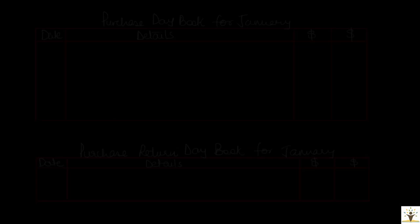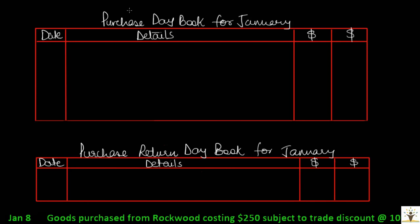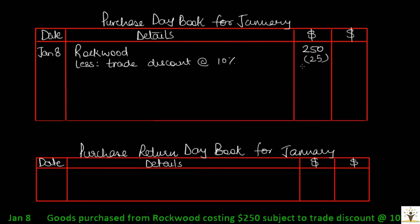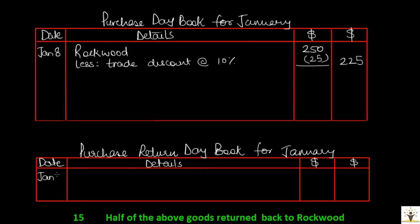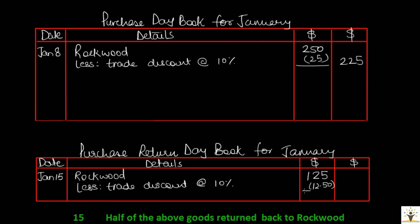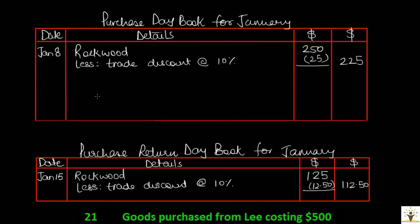Now let us record transactions in the purchase day book and purchase returns day book. On Jan 8, goods were purchased from Rockwood costing $250 subject to a trade discount of 10%. In the purchase day book: date Jan 8, details Rockwood, $250 in the working column, less trade discount at 10% = $25, net amount in the last column = $225. On Jan 15, half of these goods were returned to Rockwood — a purchase returns transaction. Date Jan 15, details Rockwood, list price $125 (half of what was purchased), less trade discount at 10% = $12.50, net amount = $112.50.